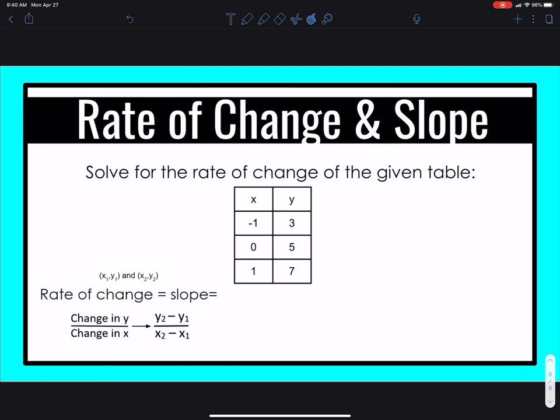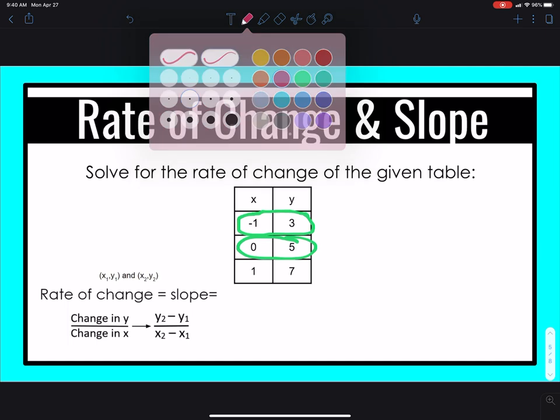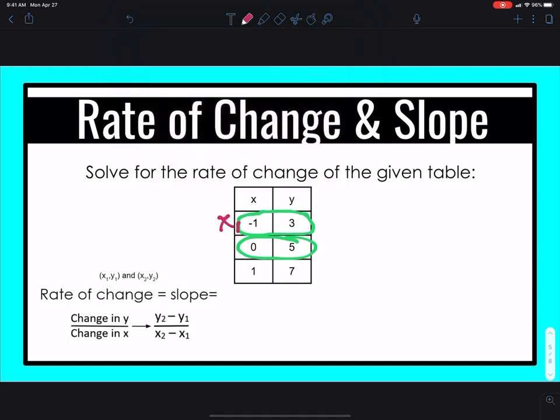Let's look at another example. For this example, we are going to find the rate of change from the given table. Your goal here is to pick two coordinate points. Any two coordinate points. You're given three, but you only need two. So I picked the top two just because they're written first. The first thing you want to do is label them. So this is my x1, y1 because it's written first. This is my x2, y2 because it's written second. All you have to do now is plug in those values into the formula and solve.